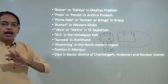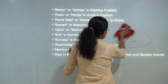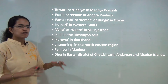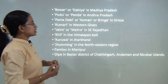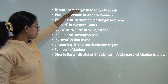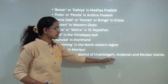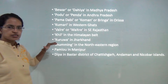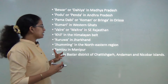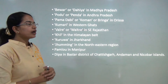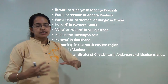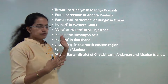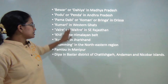In India, we do not have a unified name for slash and burn agriculture across the country. In Madhya Pradesh it is called Bewar or Dahiya. In Chhattisgarh it is called Deepa. In Manipur it is Pamlu. In the northeastern states it is known as jhuming cultivation. These regional names are commonly asked in objective examinations, so you must remember them.